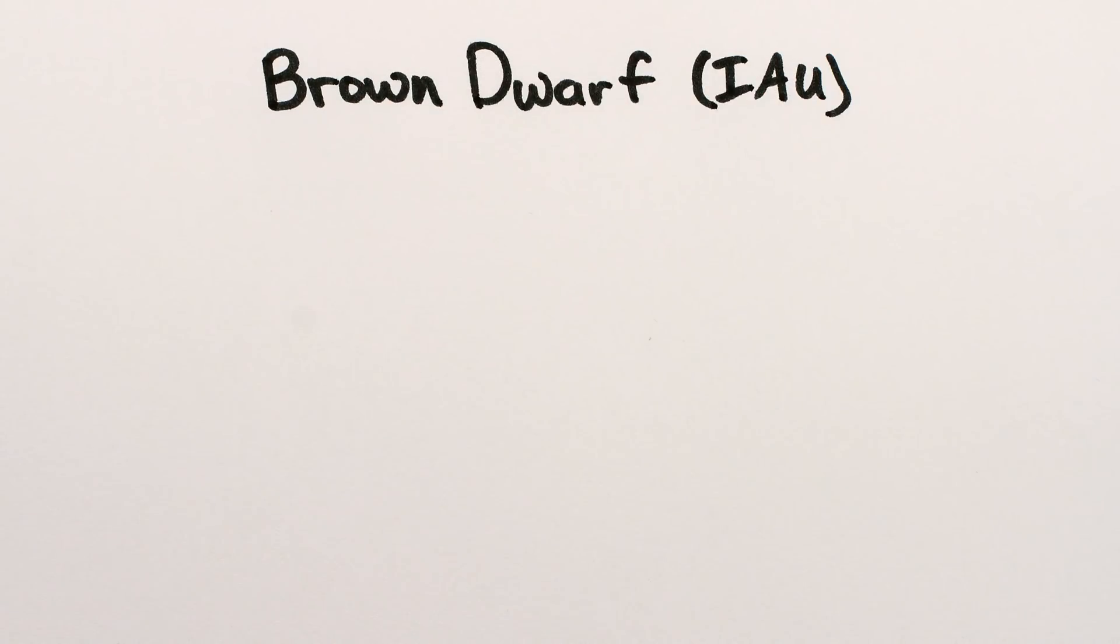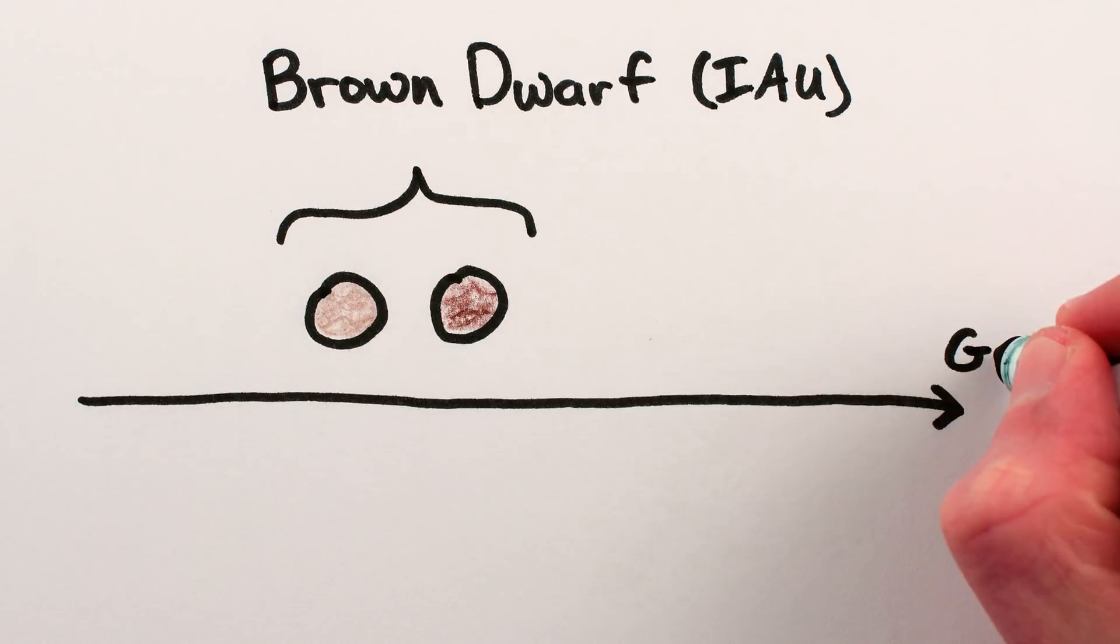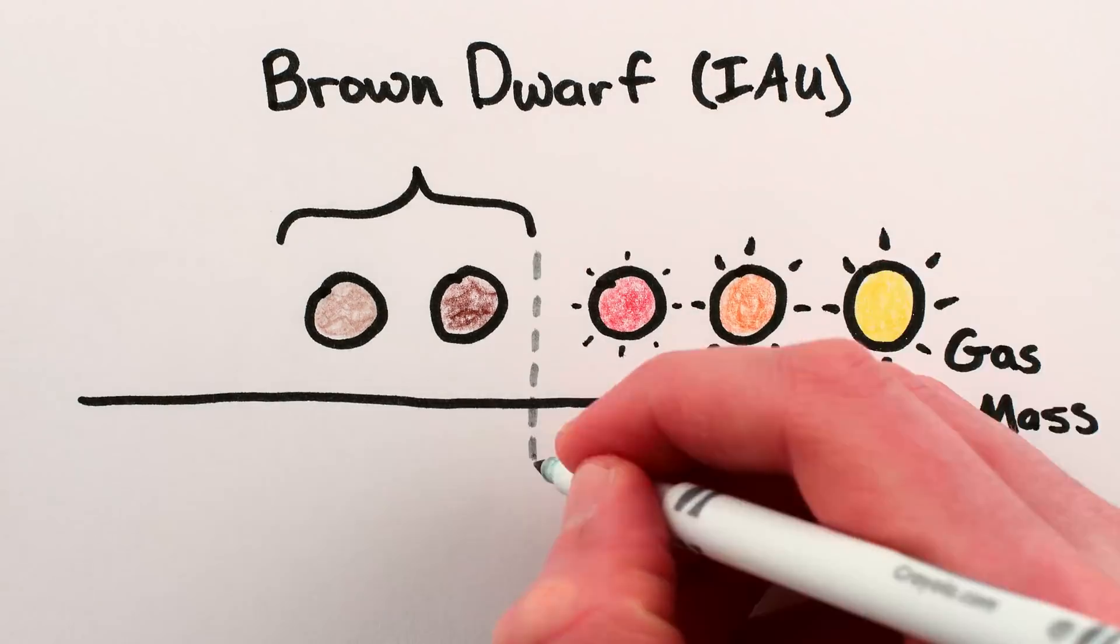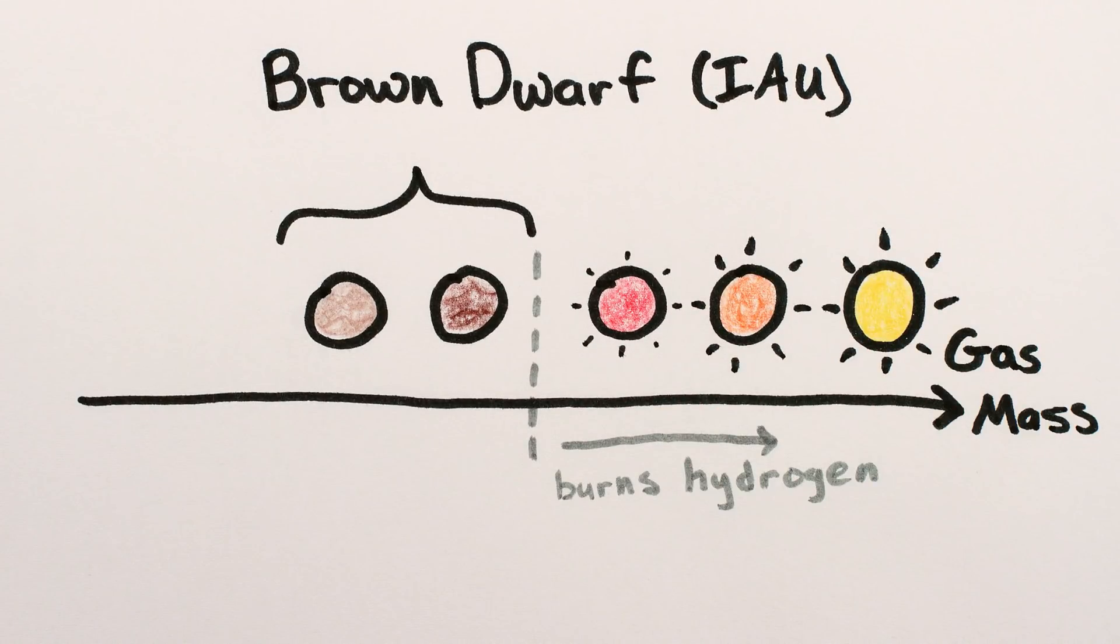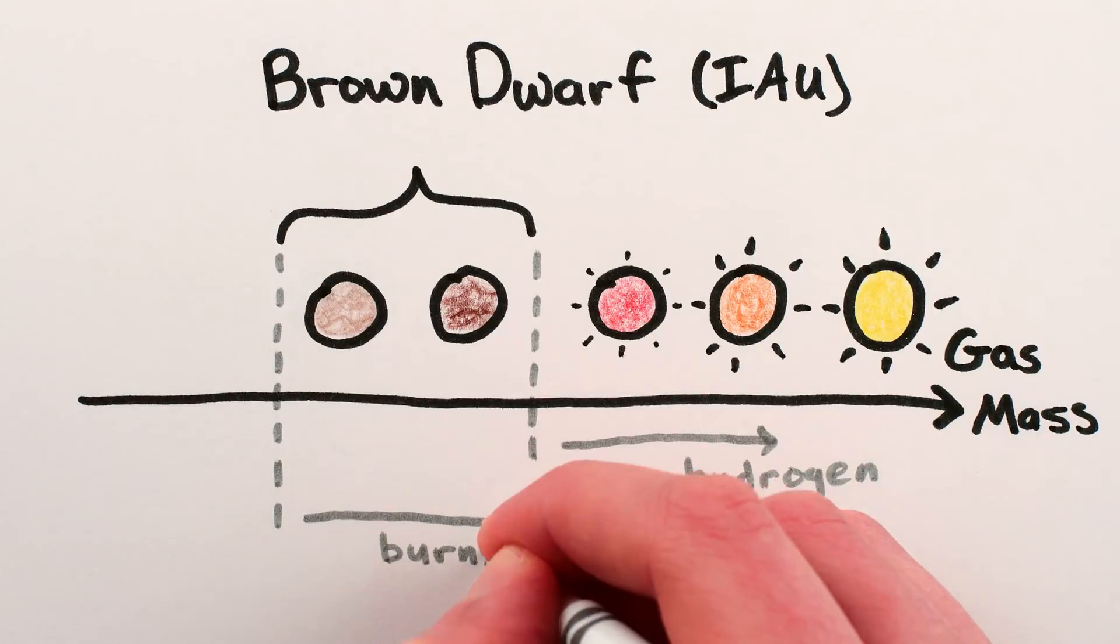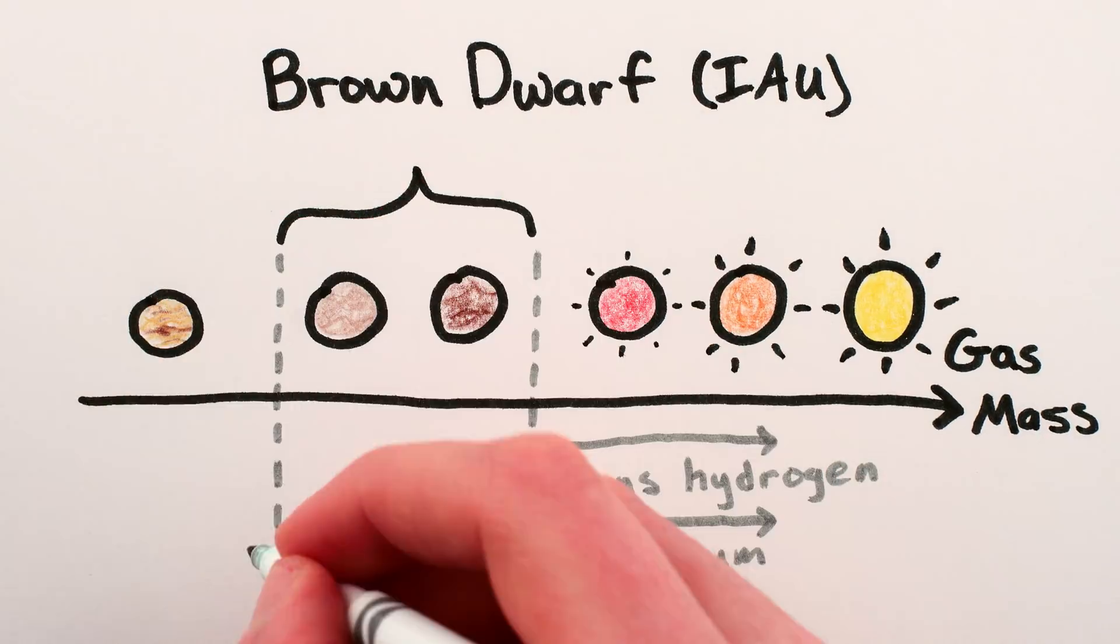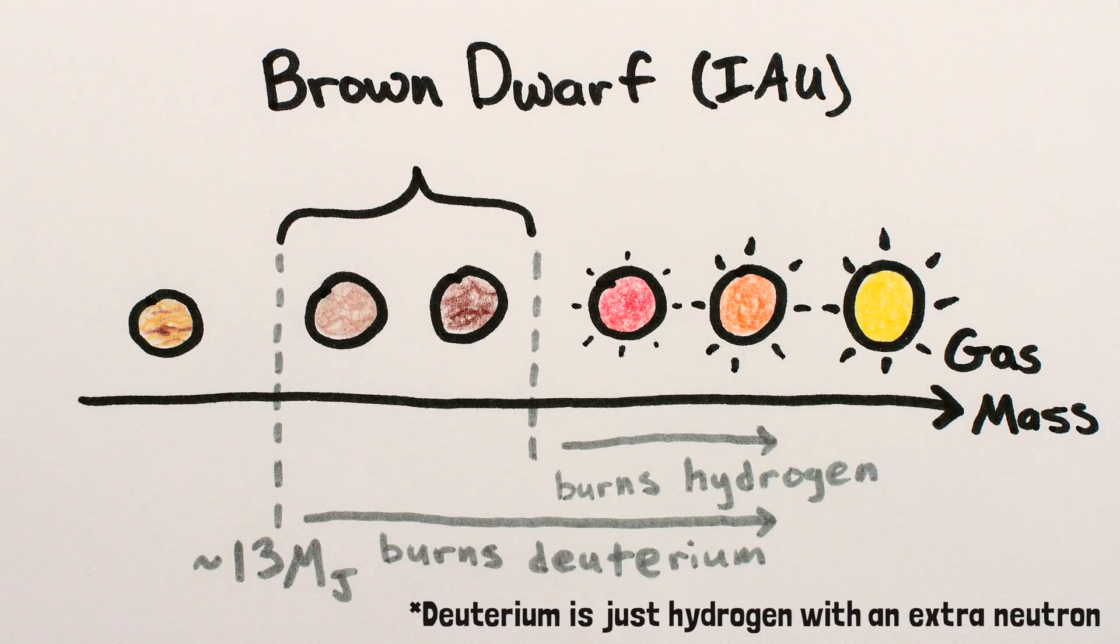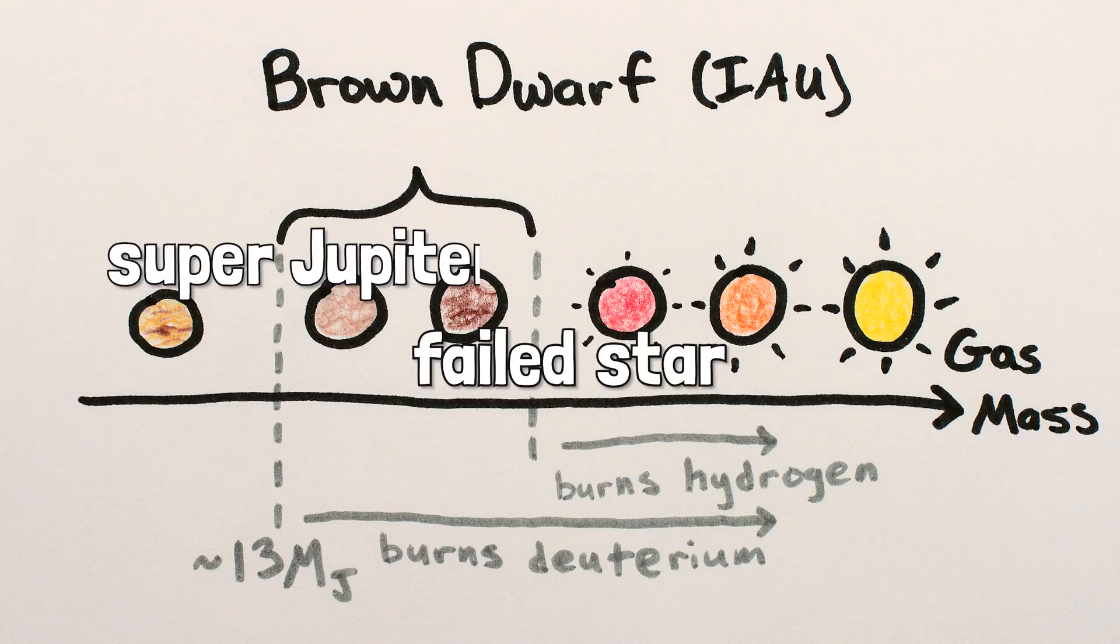The International Astronomical Union defines brown dwarfs as balls of gas in space that are too small to be bona fide hydrogen-burning stars, but large enough to burn deuterium, which anything bigger than about 13 times the mass of Jupiter can do. Because of this, brown dwarfs are often called failed stars or super-Jupiters.